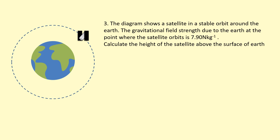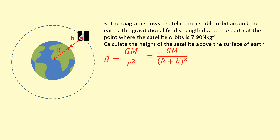The diagram shows a satellite in a stable orbit around the Earth. The gravitational field strength due to the Earth at the point where the satellite orbits is 7.90 N/kg. I need to calculate the height of the satellite above the surface of the Earth. Using the gravitational field strength equation, keep in mind that r is the radius from the center of the planet, so it's made up of the radius of the planet plus the height above the surface that we're looking for. We can write lowercase r as the radius of the planet plus the height, and that quantity is squared.